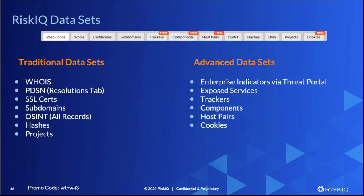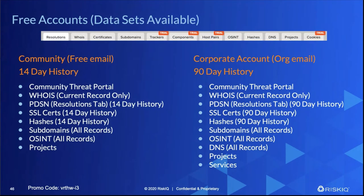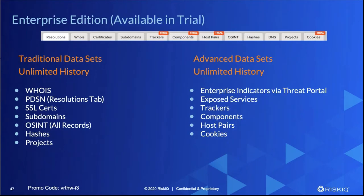The advanced data sets are: certificates; trackers — the little bits of code like Google Analytics, Clicky IDs; host pairs — the relationships between two domains, what's coming in and going out; web components — what we see running on that website when we visit it; cookies; and exposed services — the over 220 different ports and banners. If somebody has port 500 but it shows a banner of Qt FTP, we can say they've changed the port and Qt FTP is running there. With all that data coming in — links, sequence data, dependent requests, certificates, banners, web components — we're able to link all this infrastructure together to give you the full picture. In a trial, trackers, components, host pairs, and cookies are the advanced data sets that work during the trial period; after that you need a paid account.